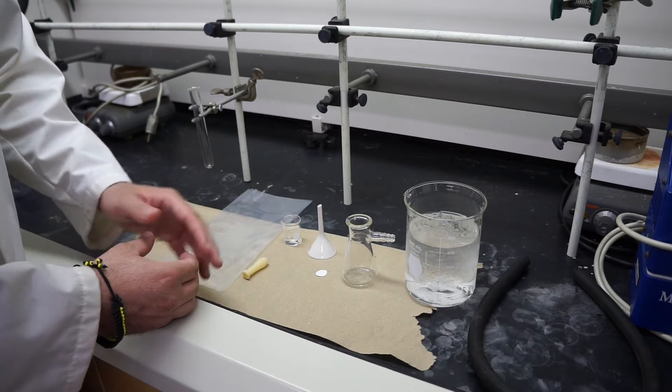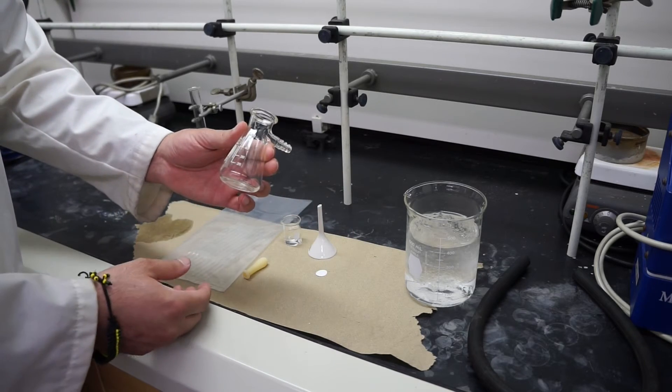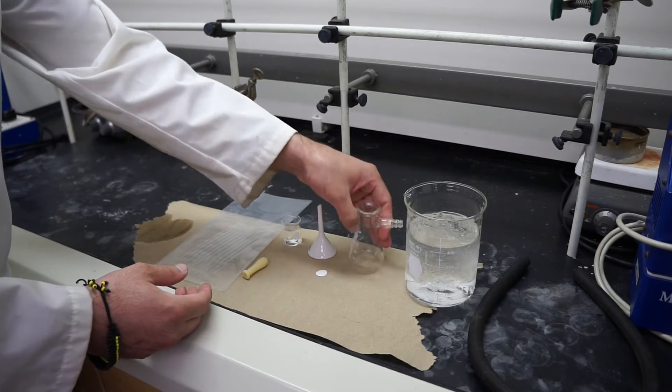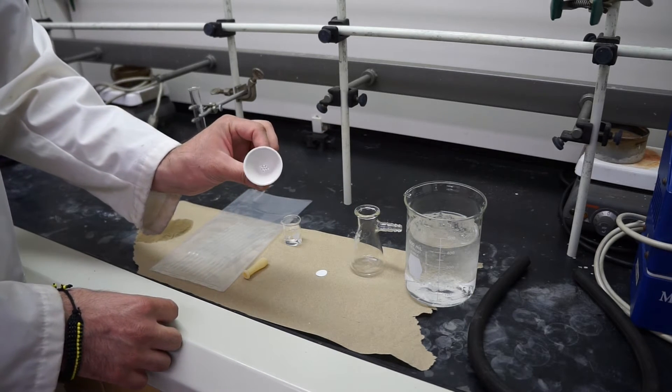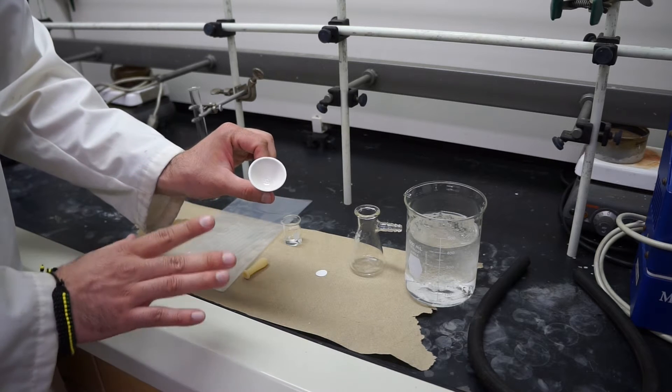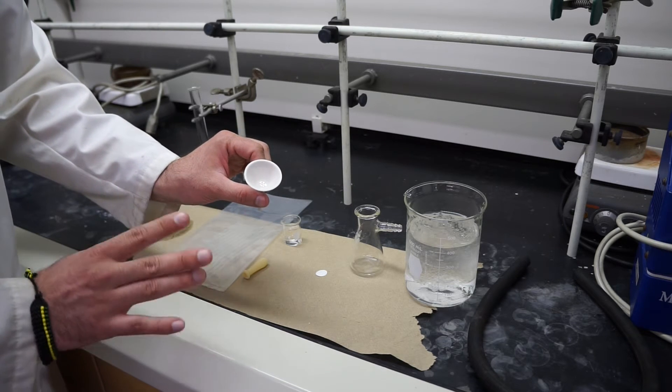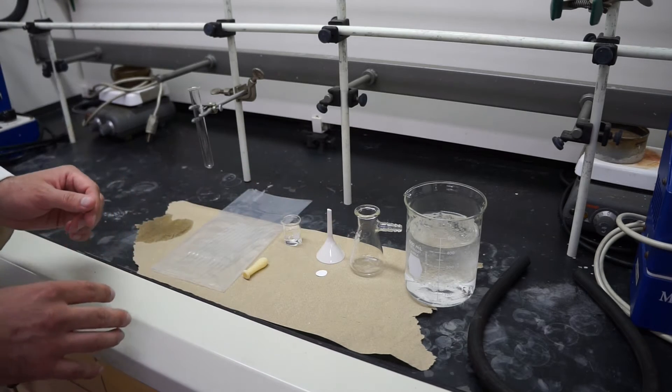For the workup which is isolation of the product, we're going to use a filtration flask, small filtration flask, as well as a Hirsch funnel. The Hirsch funnel works just like the Buechner funnel but it's used for smaller quantities. If you don't have as much crystals, Hirsch funnel is usually the way to go to minimize loss of your product.